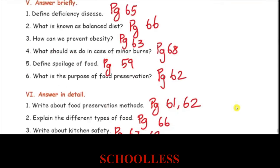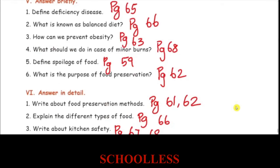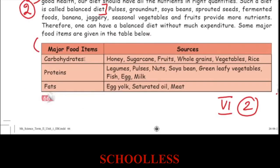Explain the different types of food — page number 66. Different types of food are shown in a table: carbohydrates, proteins, fats, etc.